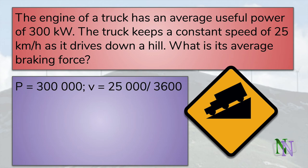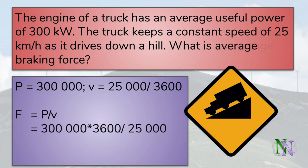So the power is 300,000 in watts, and the kilometers per hour is converted by multiplying by a thousand and dividing by 3600. We do not have to state the actual speed in meters per second. It is better to keep this as an unresolved fraction. So the formula is P divided by V, which means 300,000 times 3600 divided by 25,000.